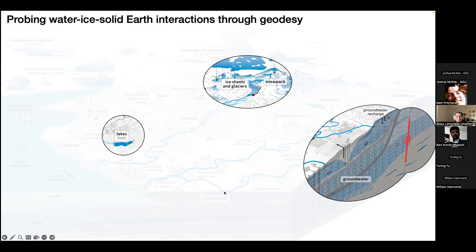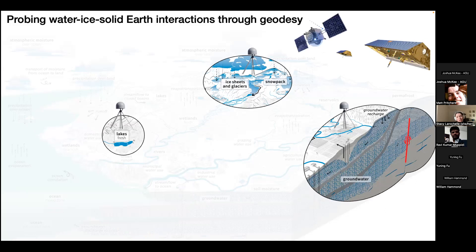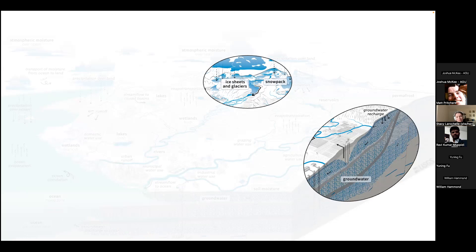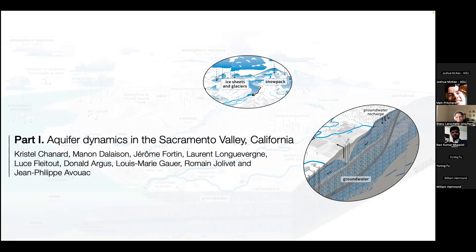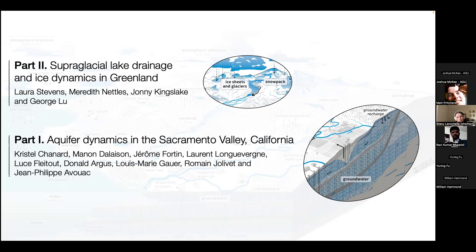Geodetic tools like GNSS, GRACE, and InSAR play a huge role in understanding these various processes. Today I'd like to talk about studying two of these systems with geodesy. First, I'll show some work on the Sacramento Valley aquifer system I started during my PhD with Jean-Philippe Avouac, along with collaborators Christelle Chanard and Manon D'Alaison. Then I'll briefly introduce my ongoing postdoc work on supraglacial lake drainages and ice dynamics in Greenland, at Lamont with Laura Stevens — now at Oxford — Meredith Nettles, John Kingsley, and George Liu.